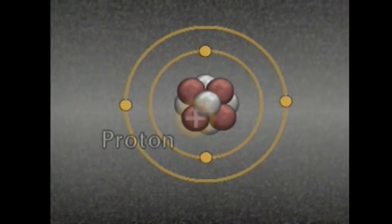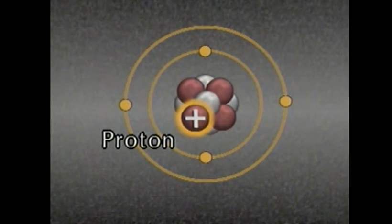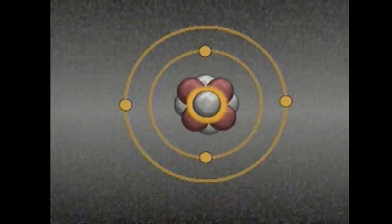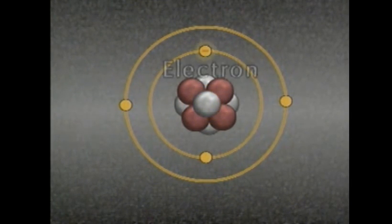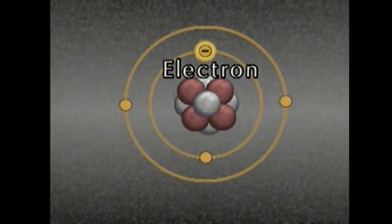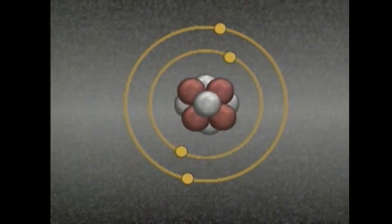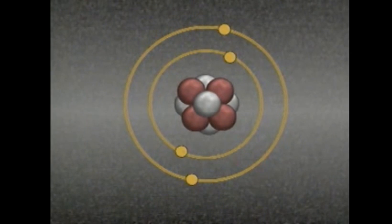A proton is a positively charged particle. Protons are found in the nucleus or center of an atom. Neutrons are neutral — they don't have a charge. An electron is a negatively charged particle. Electrons orbit the nucleus of an atom. An atom has the same number of electrons as it has protons.